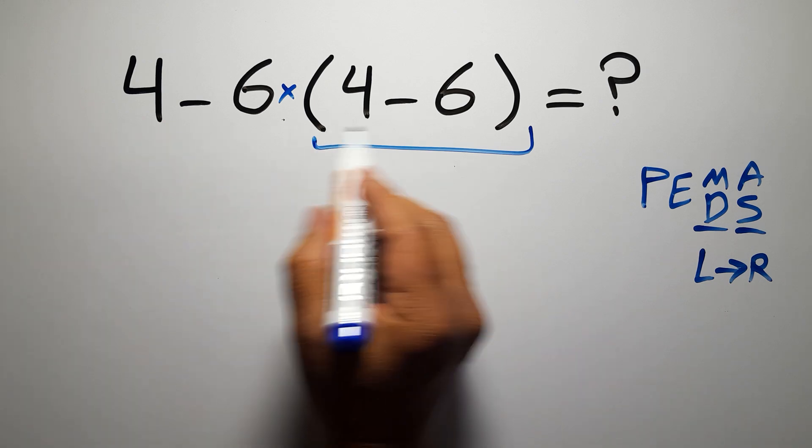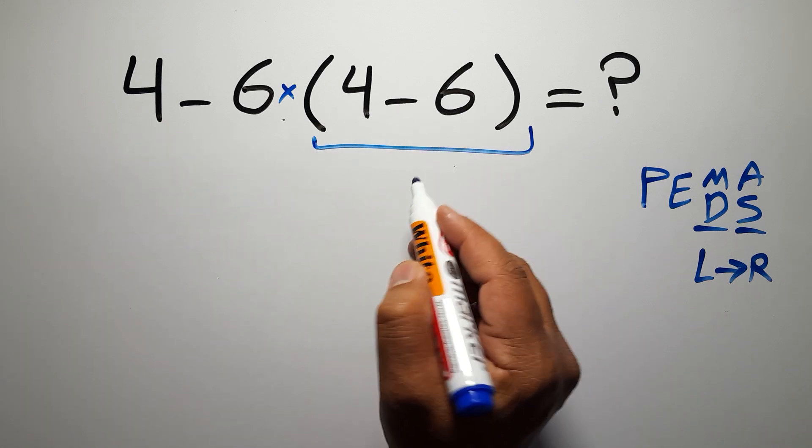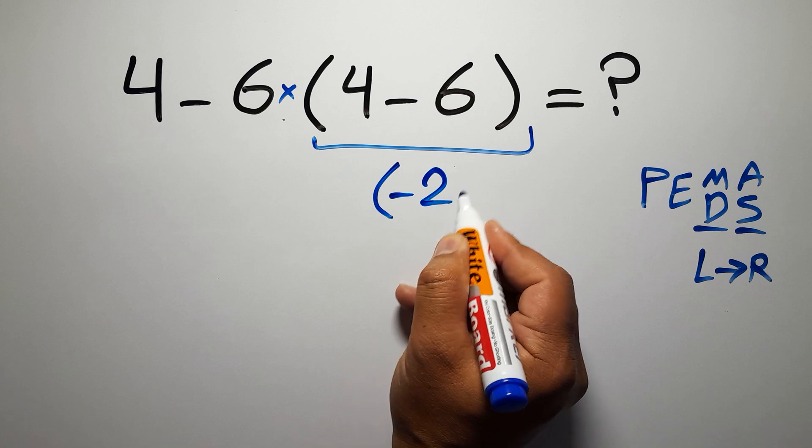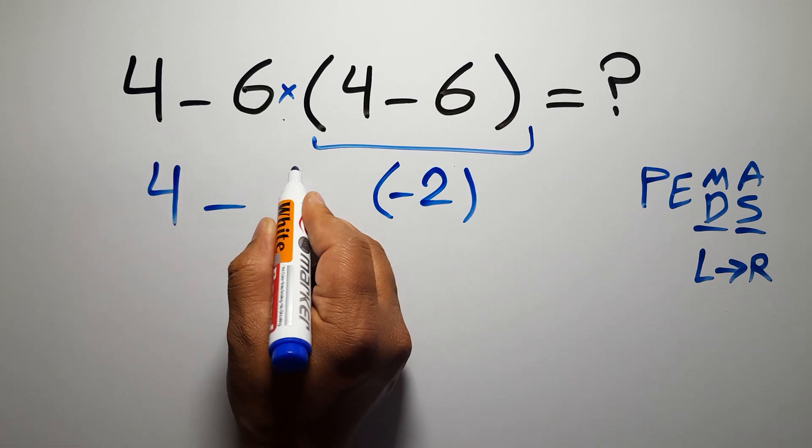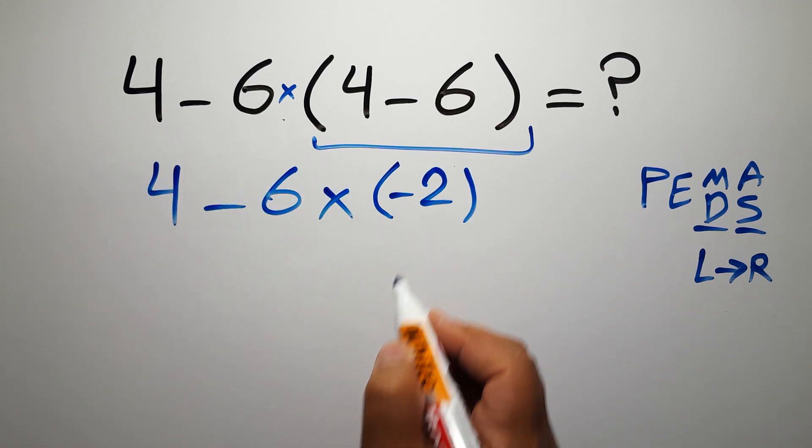So first, this parenthesis: 4 minus 6 is just negative 2, so 4 minus 6 times negative 2.